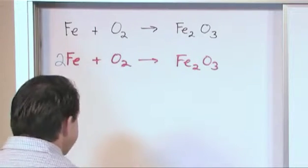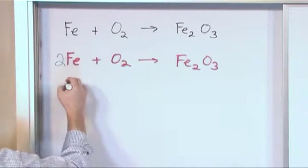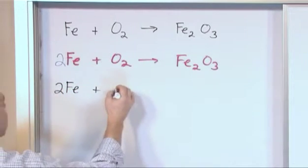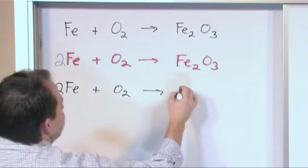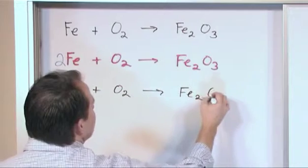Let's go ahead and rewrite the reaction again and continue with the next step. Fe, well actually it's 2Fe now, plus O₂ yields Fe₂O₃.